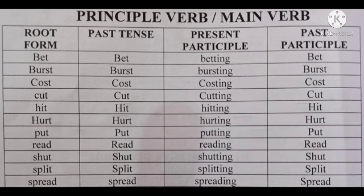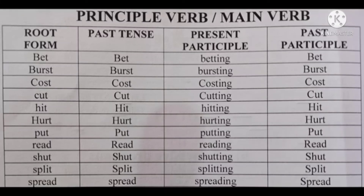Continuing type one verbs — all three forms the same: Cut — root form: cut, past tense: cut, past participle: cut. Hit — root form: hit, past tense: hit, past participle: hit. Hurt — root form: hurt, past tense: hurt, past participle: hurt. Put — root form: put, past tense: put, past participle: put.